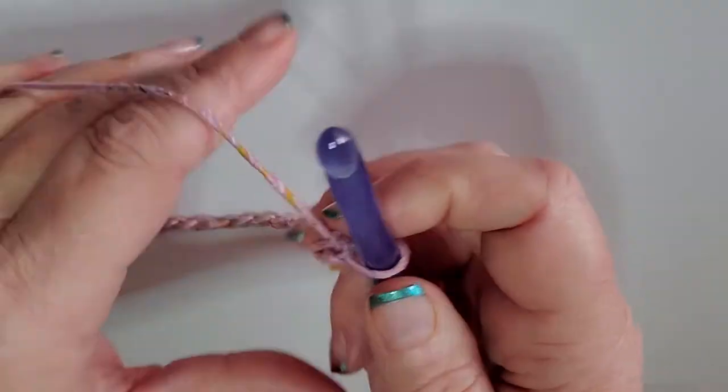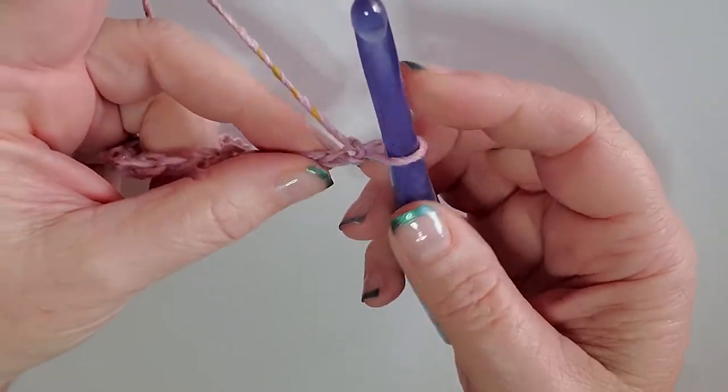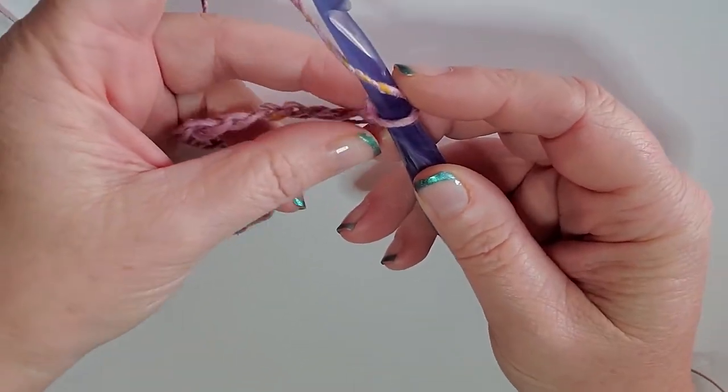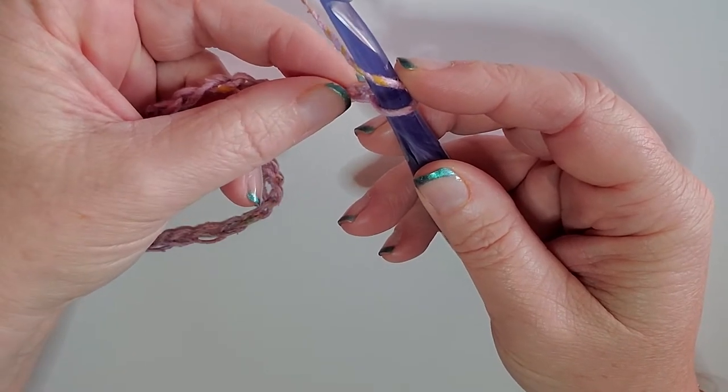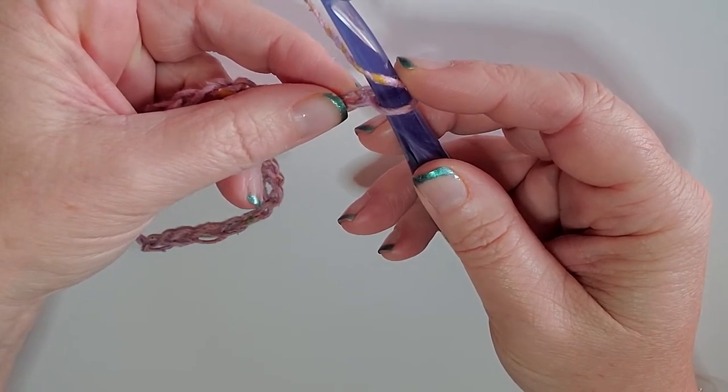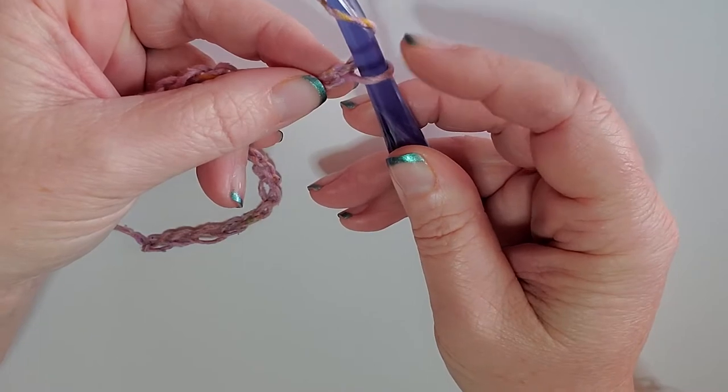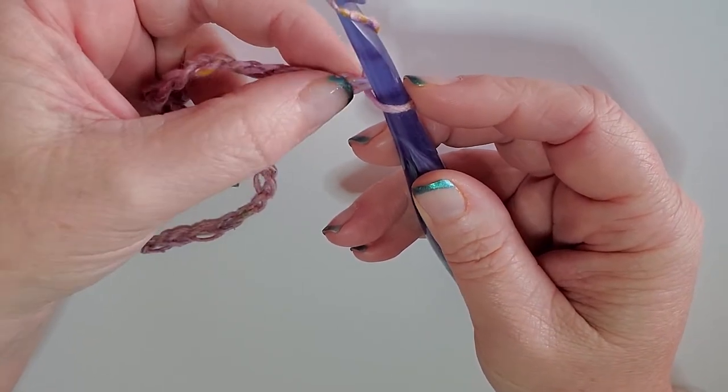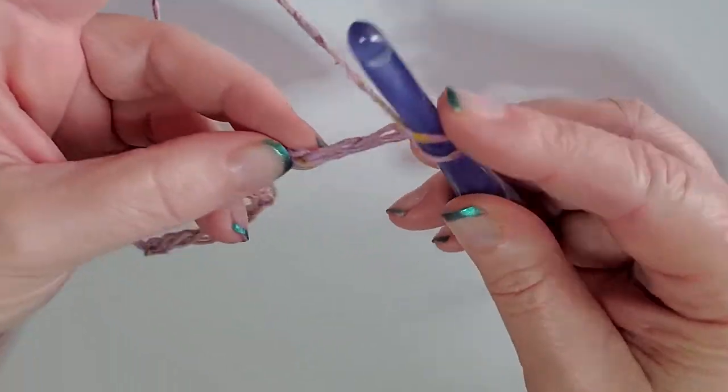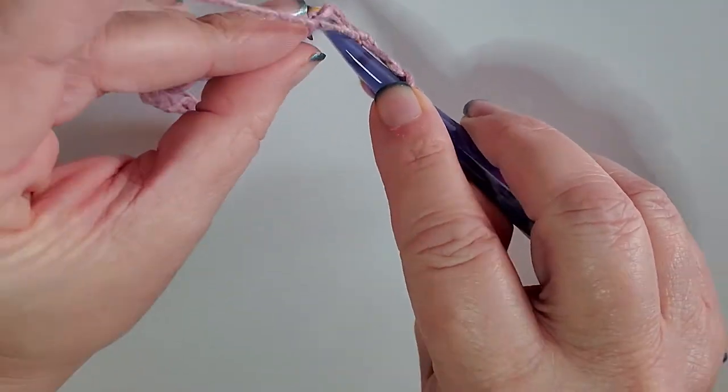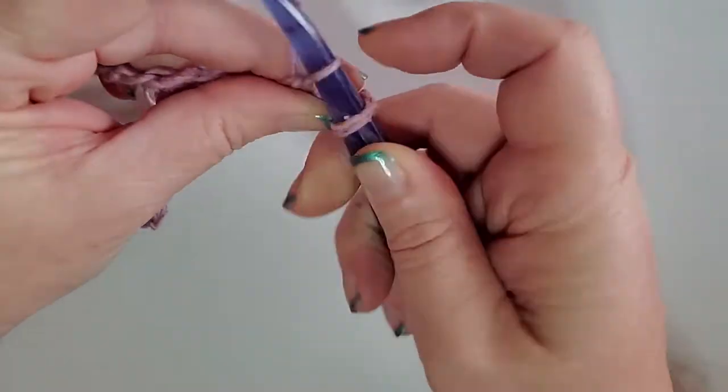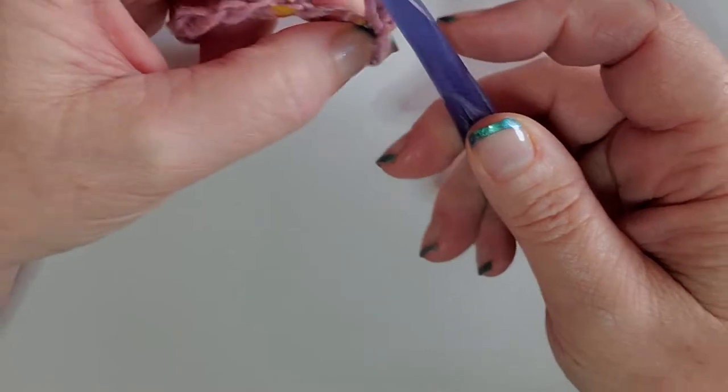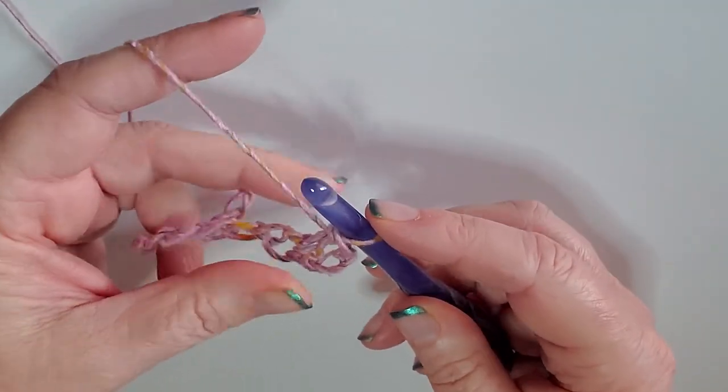For the first row, all we're going to do is go 4th from the chain. Remember we never count this. We're going to go 1, 2, 3, 4, and go into that stitch and we're going to do just a double crochet.